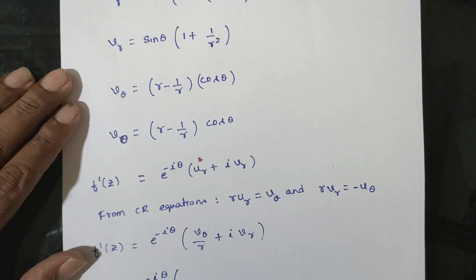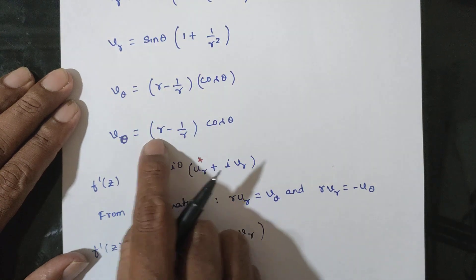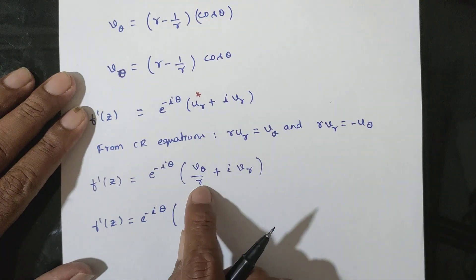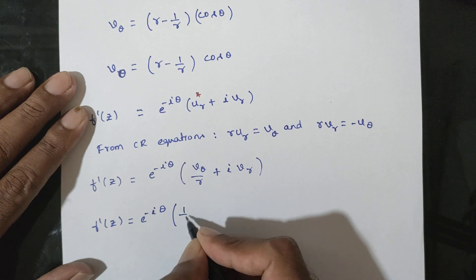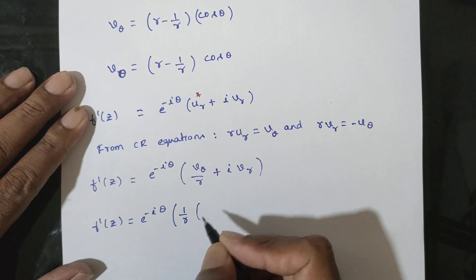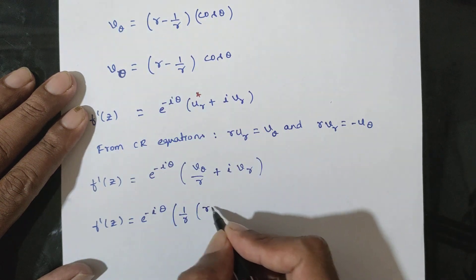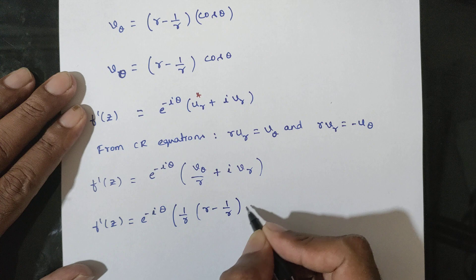So f'(z) = e^(-iθ) · (Vθ/r + i·Vr). Substituting, Vθ/r = (r - 1/r)cosθ / r and Vr = sinθ·(1 + 1/r²). We now evaluate at θ = 0 to substitute r = z.